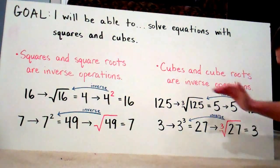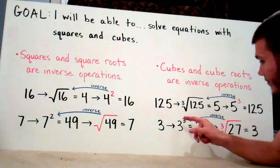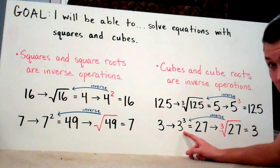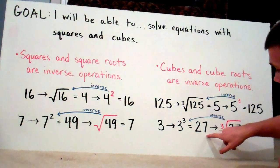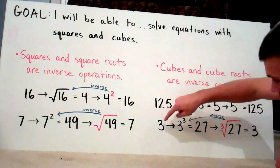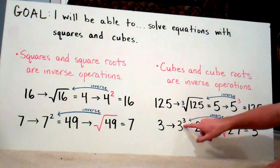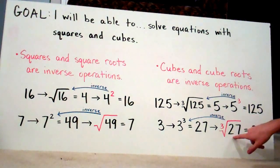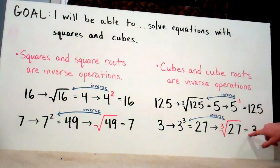And it works the other way around. Let's say I give you the number 3, and we put 3 to the third power — we cube it. 3 to the third power is 27. So in order to go back to my original number, I have to do the inverse of cubing a number, which is finding the cube root. If I find the cube root of 27, I get my original number, 3.